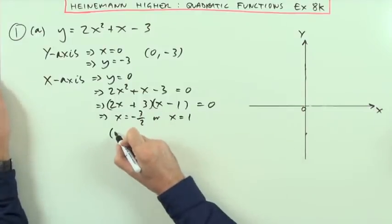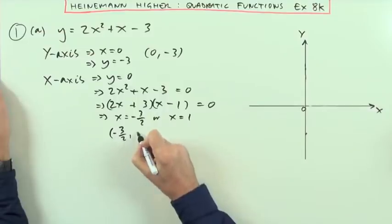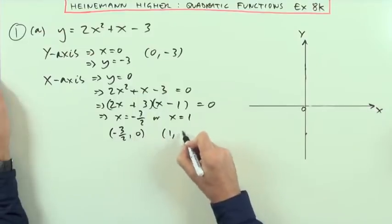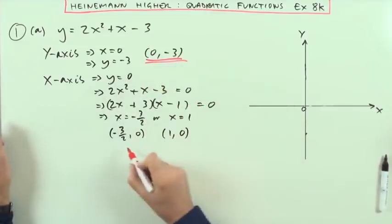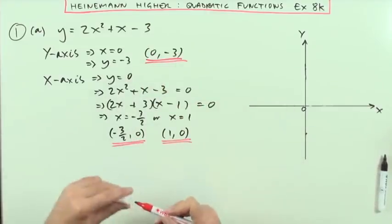But it does say what the points, so I better put it down. So I've got negative 3 upon 2, 0, and 1, 0. So far, I've got where it cuts the axis. Y-axis there. X-axis here.